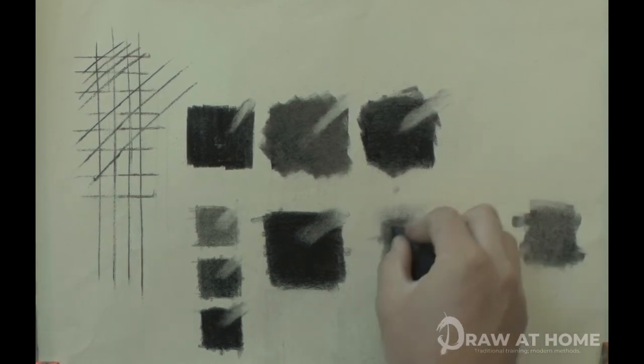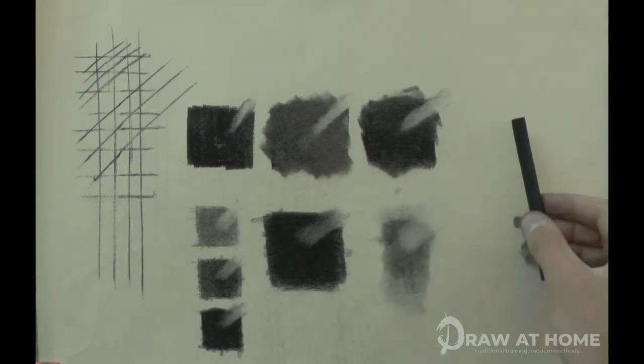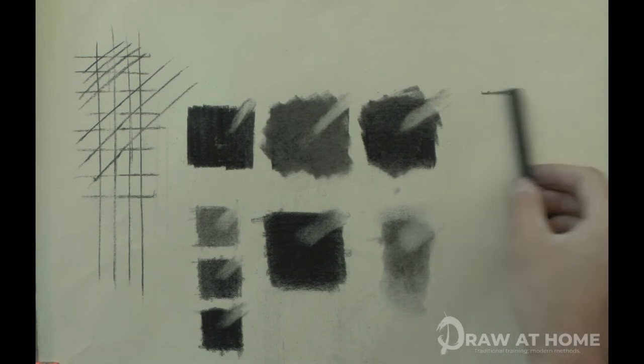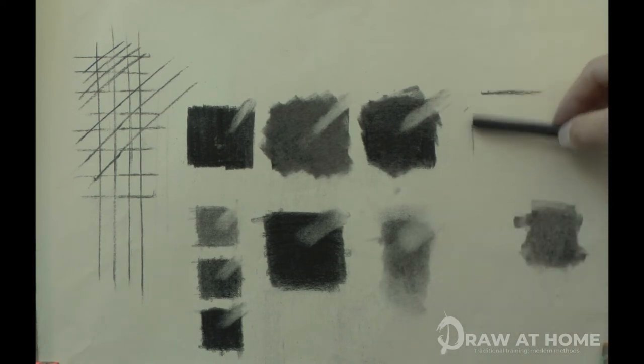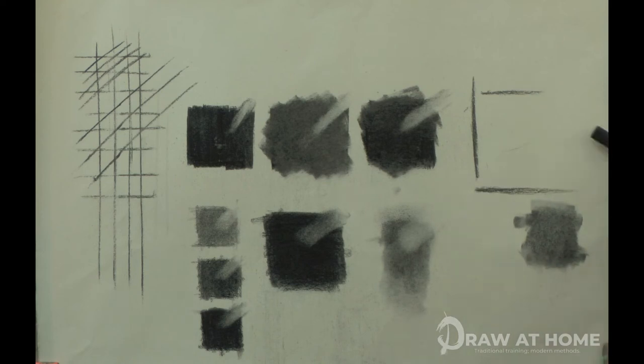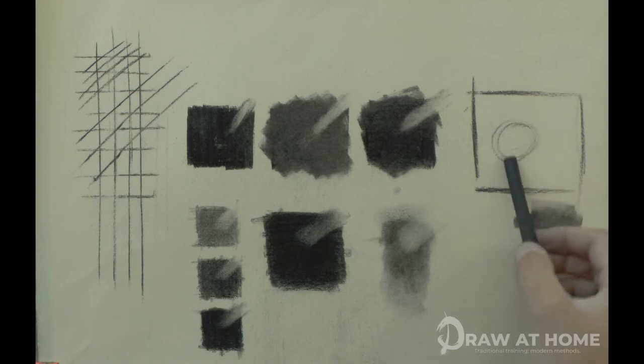So let's create a simple still life using some of these techniques. Firstly, using willow charcoal to map out the proportion and shadow shapes. As willow charcoal is easy to adjust, it is perfect for the beginning stages of a drawing.